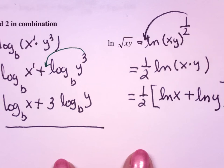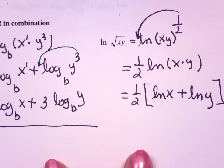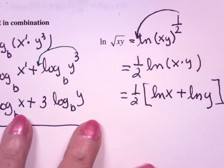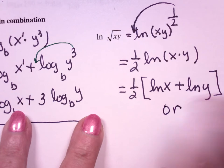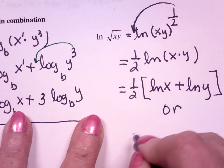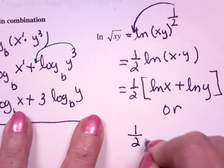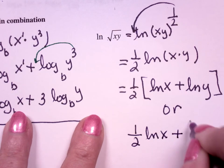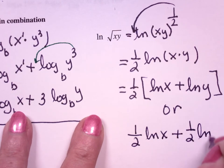Now if you want to multiply through by the 1/2, you can, or you can leave it alone. So I would put an or on this. The other answer would be 1/2 natural log x plus 1/2 natural log y.